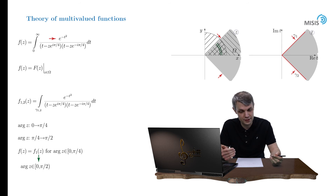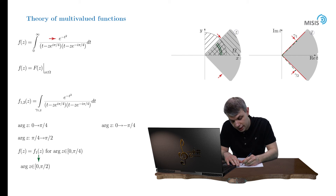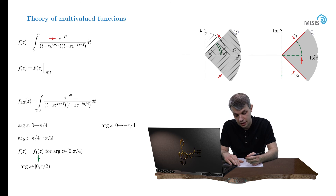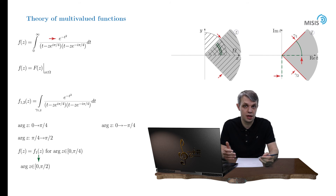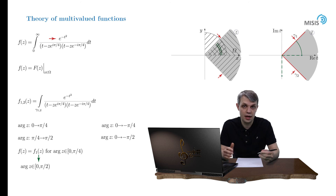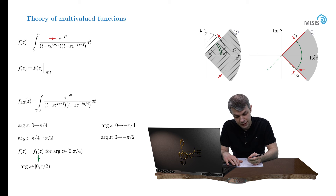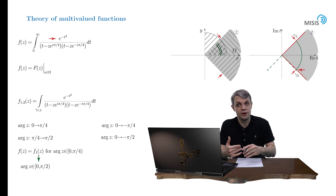The same reasoning applies to f2(z) and f(z). When the argument of z changes from 0 to negative pi/4, the upper pole rotates almost to the real axis while the lower pole moves safely away from gamma2 — so f(z) and f2(z) coincide. When the argument reaches negative pi/2, f(z) stops existing, but f2(z) remains well-defined since the upper pole hasn't crossed gamma2. Thus f2(z) is an analytic continuation of f(z) into the domain where the argument of z ranges from 0 to minus pi/2.